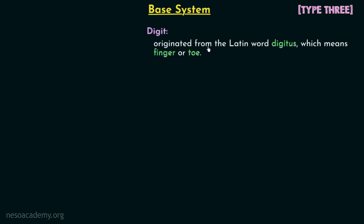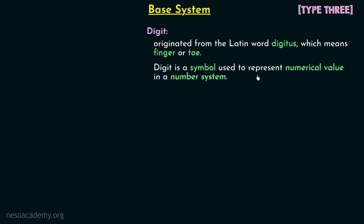Digit is a word originated from the Latin word 'digitus,' which means finger or toe. Based on our general understanding, a digit is a symbol used to represent a numerical value in a number system. For example, 1, 2, 3, etc. — these are all symbols, or digits, which we use to represent numerical values.